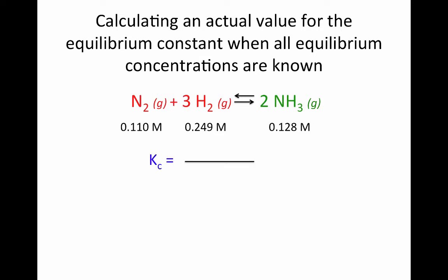Let's write an expression for the equilibrium constant. We put our products on top — we only have one product, which is ammonia — so we have the concentration of ammonia raised to the second power because the stoichiometric coefficient is two. Then we have our reactants on the bottom: nitrogen gas, only one mole of that, so nitrogen raised to the first power; and hydrogen gas with a stoichiometric coefficient of three, so that's raised to the third power.